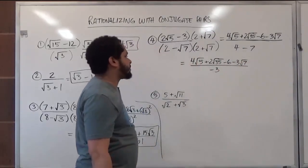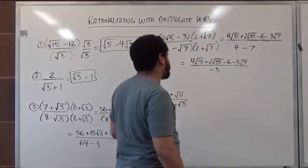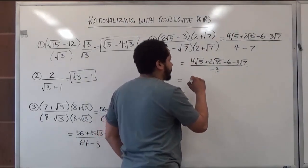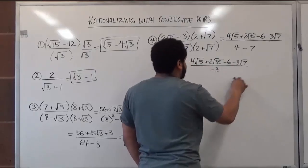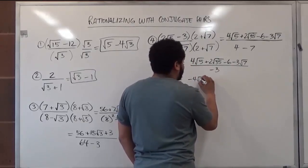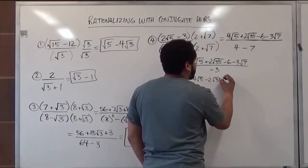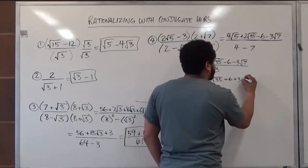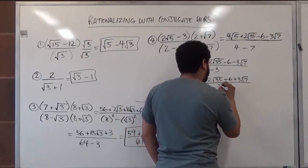As the final step we can change the sign of every term so we're dividing by a positive number, since the negative is always associated with our numerators. We change signs of all terms up top: negative 4 radical 5, negative 2 radical 35, positive 6, positive 3 radical 7's, all over 3.